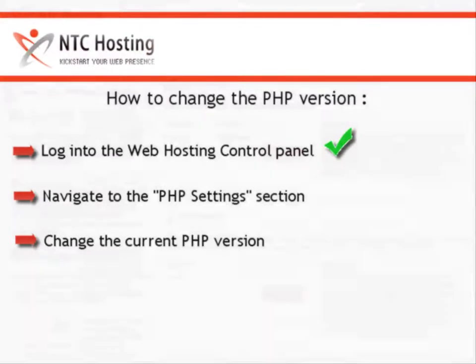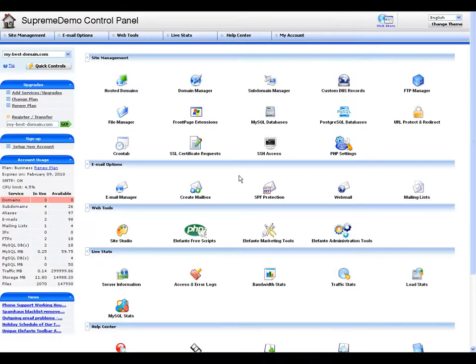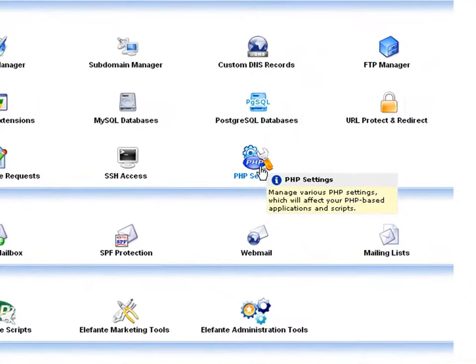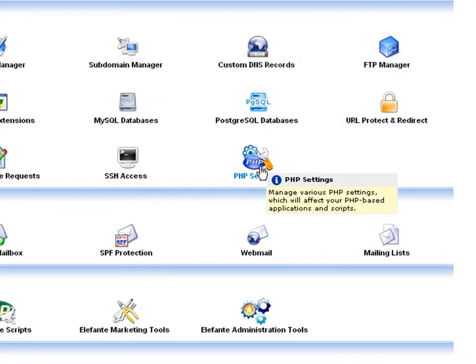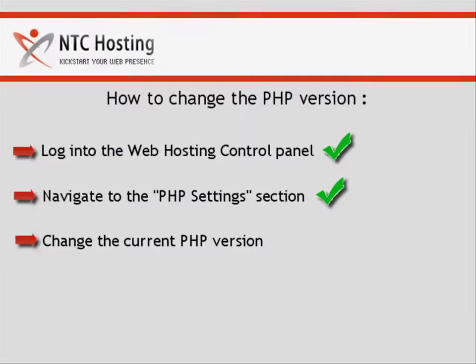Now let's see how to log into the PHP settings section of your Control Panel. In the Control Panel Index page, click the PHP settings icon located in the Site Management section. We have completed the first step of the Change PHP version procedure.